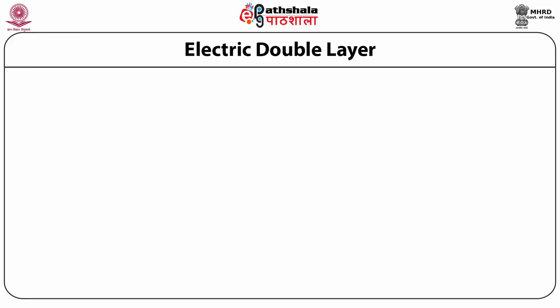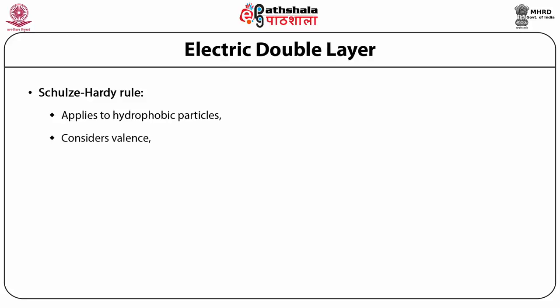These ion effects can be systematized by referring to the Schulze-Hardy rule. The Schulze-Hardy rule states that the valence of the ions having a charge opposite to that of the hydrophobic particle determines the effectiveness of the electrolyte in aggregating the particles. The aggregating efficiency therefore increases with the valence of the ions. Divalent ions are 10 times as effective as monovalent ions. Trivalent ions are 1000 times as effective as monovalent ions. This rule is valid only for systems in which there is no chemical interaction between the aggregating electrolyte and the ions of the double layer of the particle surface.